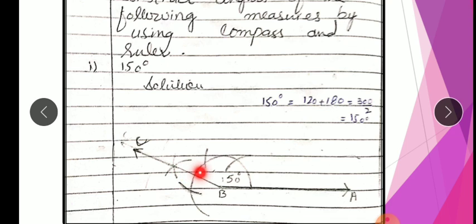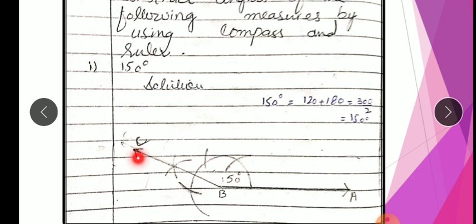Toh sabse pehle, aapne kya karna hai? Aapne jitni compass open ki, use thori si extend bhi kar sakte hain. Aapne 120 degree ki arc li hai. Yahan pe compass rakh ke, ek arc lagaiye. Aur phir 180 degree ke point pe compass rakh ke doosra arc lagaiye. Jahan ye arcs intersect hain, us point se line kheench kar A tak join karo. Woh point C hai — B, C, A. We have to pass through this point. It's called C.